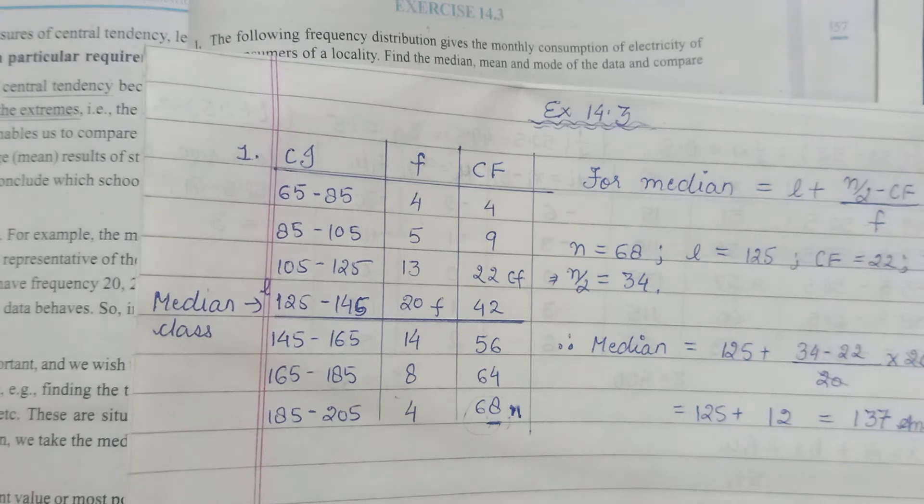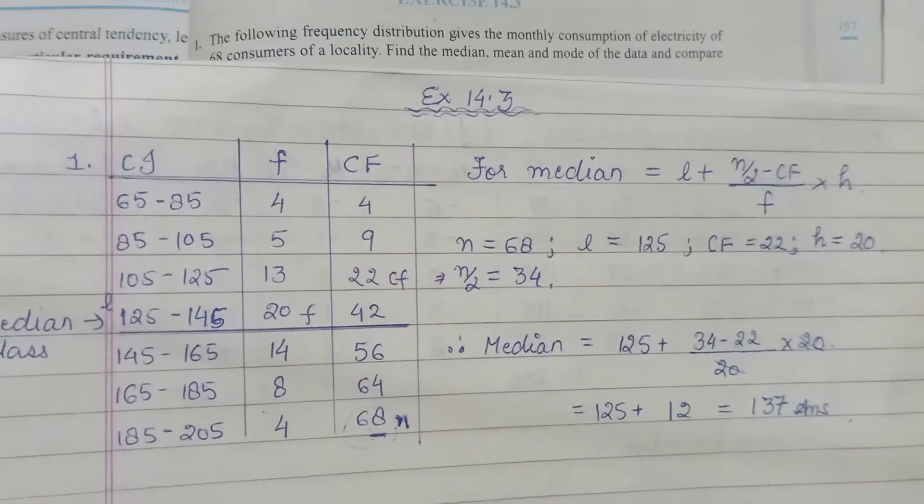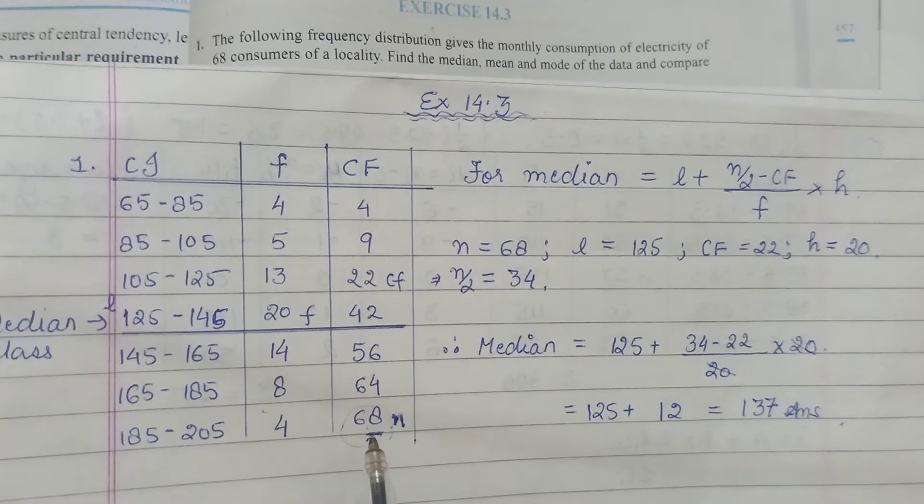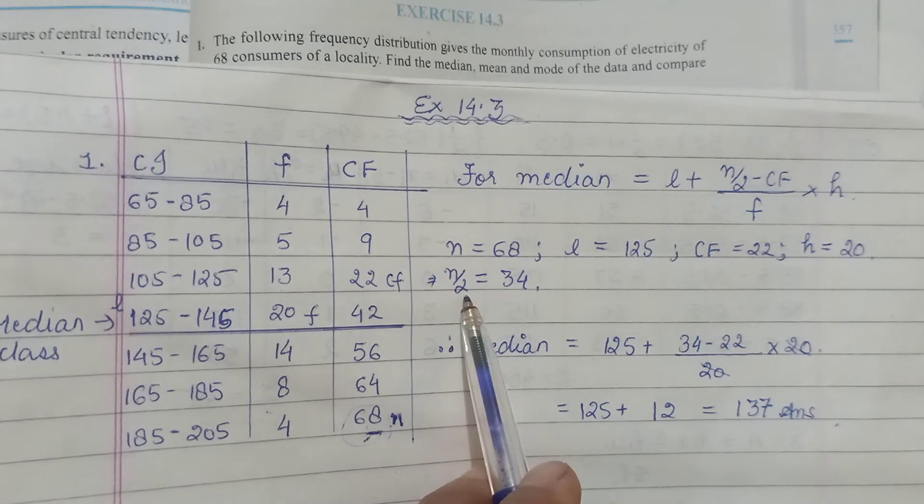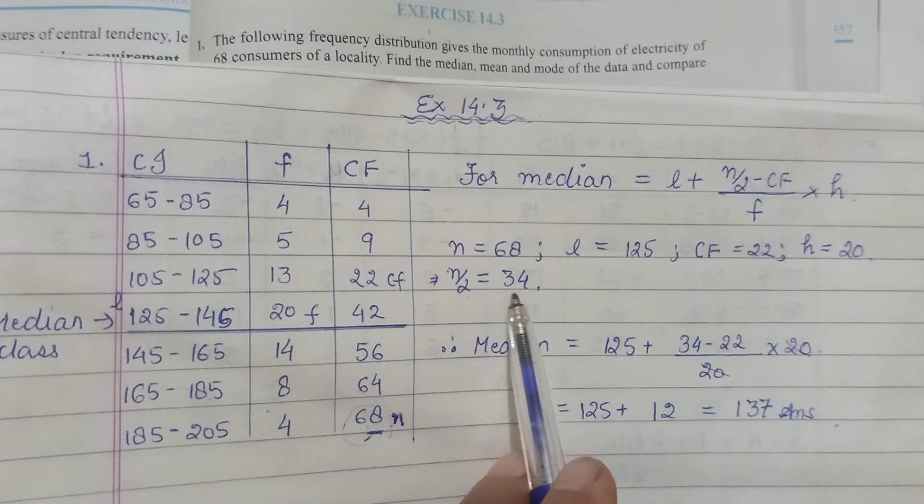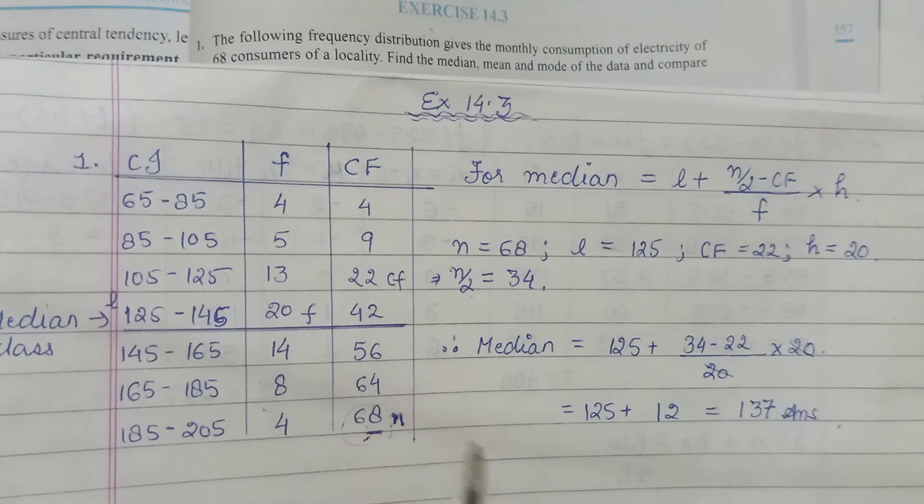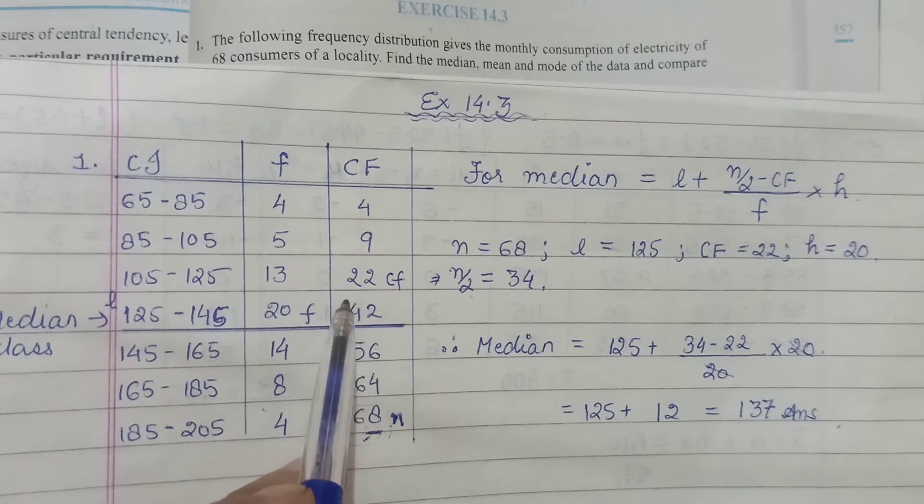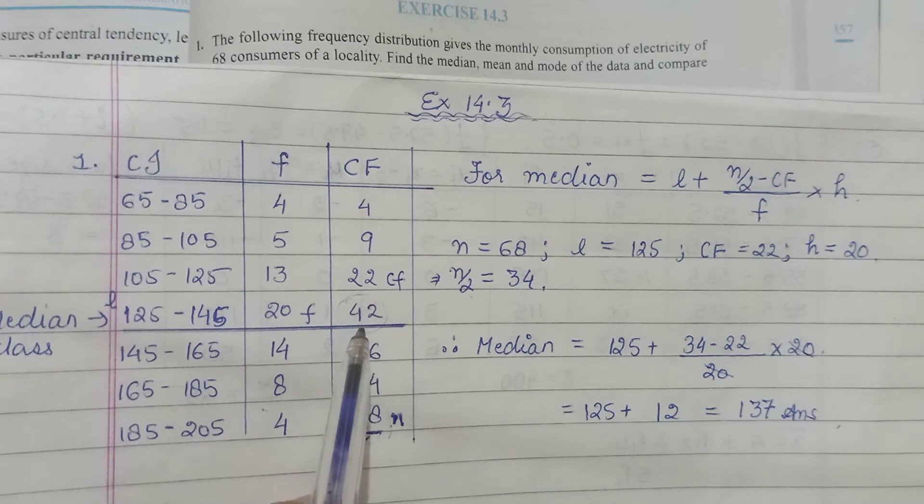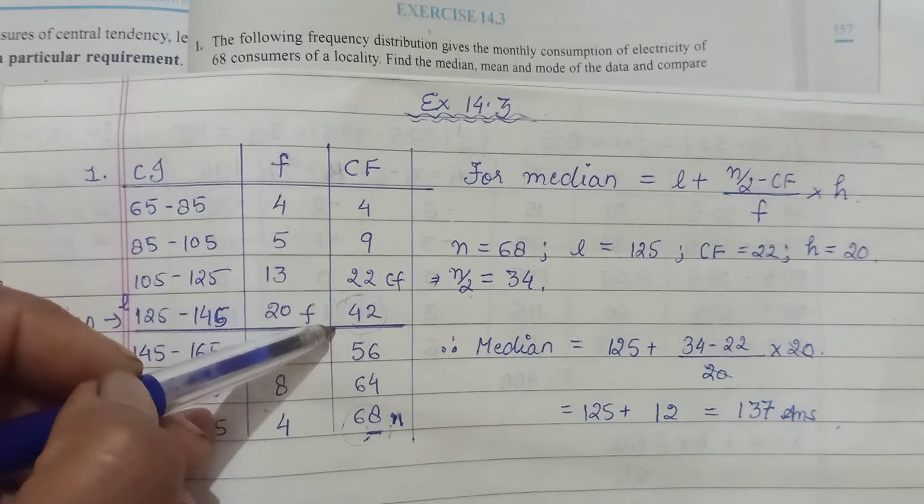Next is your median. Median as we said is the mid value, so aapka n yaha se pata chal gaya aapko is 68. If n is 68 then mid of it, half of it, you consider n by 2, that is 34. So hum yeh dekhte hai ki ismeh yeh 34 is likely to come where. So CF meh we see the frequency which is just more than this 34, so 42.